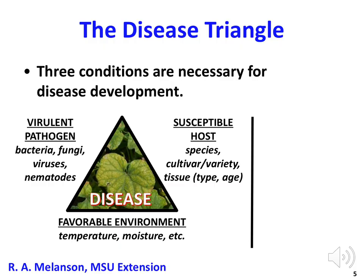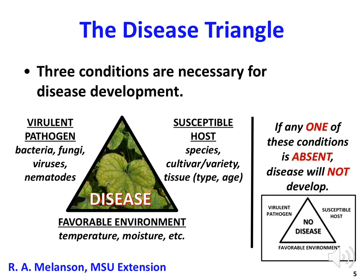Disease development requires the presence of a virulent pathogen, a susceptible host, and favorable environmental conditions. Plant pathologists call this the disease triangle. Any given disease can only develop when all three conditions are met. However, if any one of the conditions is absent, the disease will not develop.